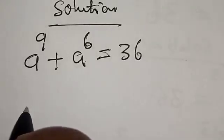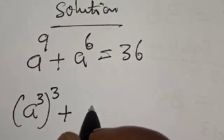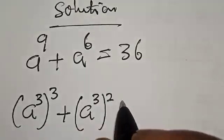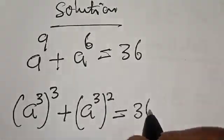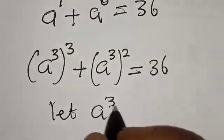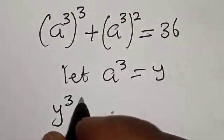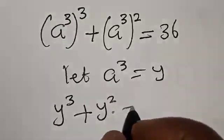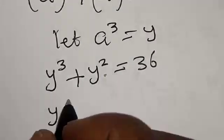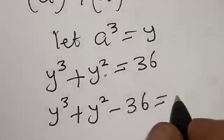This gives us A raised to power 3, cubed, plus A raised to power 3, squared, is equal to 36. Now, let A raised to power 3 be equal to Y. We have Y raised to power 3 plus Y squared is equal to 36, and this gives us Y raised to power 3 plus Y squared minus 36 is equal to 0.